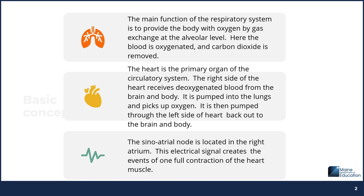Beginning with the respiratory system, this is where the body receives its oxygen, achieved by gas exchange at the alveolar level. That is where blood is oxygenated and carbon dioxide is removed. The right side of the heart receives deoxygenated blood from the body and brain, pumps it into the lungs to pick up oxygen, and then it continues to the left side of the heart and back out to the brain and body with oxygenated blood.